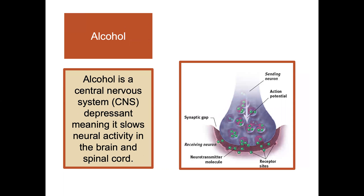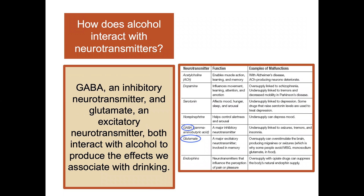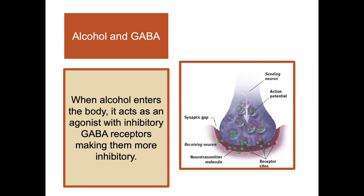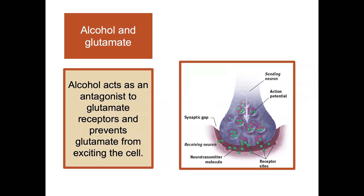Alcohol is a CNS depressant, meaning it slows neural activity in the brain and spinal cord. GABA, an inhibitory neurotransmitter, and glutamate, an excitatory neurotransmitter, both interact with alcohol. When alcohol enters the body, it acts as an agonist with inhibitory GABA receptors, making them more inhibitory. Alcohol also acts as an antagonist to glutamate receptors, preventing glutamate from exciting the cell.